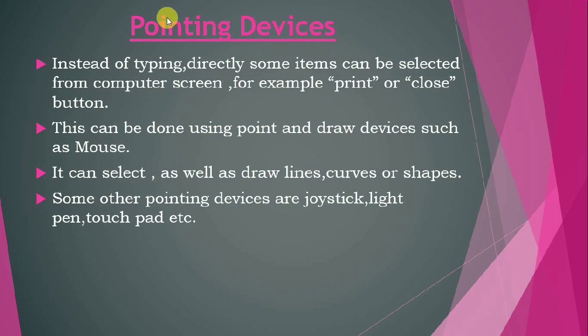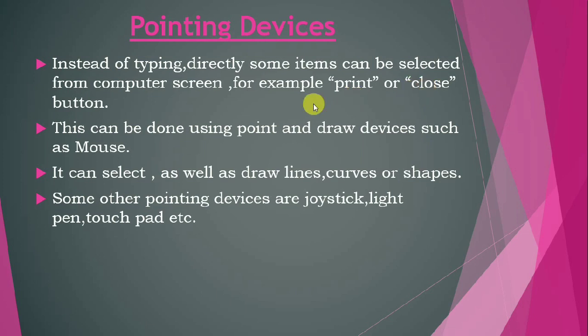Today we are going to learn about pointing devices. Pointing devices are devices attached to a computer which help us to control the movement of the mouse pointer on the screen and help us to select any item on the screen. Mouse is the commonly used pointing device, so instead of typing, some items can be selected from the computer screen. For example, we can use the print or close button to print a page or to close a file respectively.